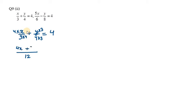Taking 12 to the right-hand side, we get 4x + 3y = 12 × 4 = 48. So this is my equation number one.